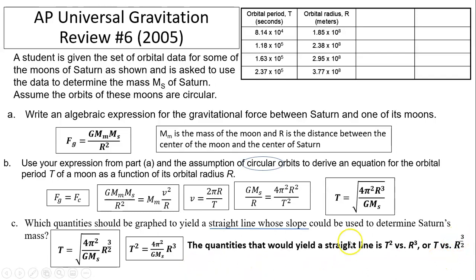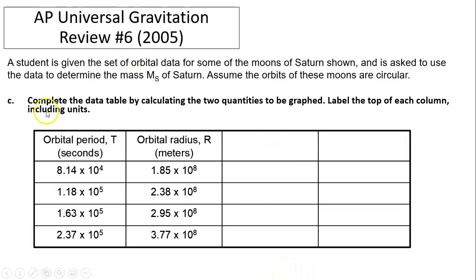So for the next question, you are asked to figure out the data. So let's see which one is easier. It doesn't matter. To me, I like t² versus r³. My reason is, then for the slope, I can make it easier for me to find Ms. Otherwise, your slope would be square root of 4π² divided by GMs. Then you have to do the slope squared to find Ms. But it's personal preference.